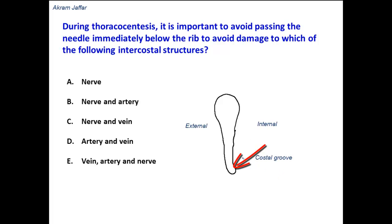The intercostal neurovascular bundle is formed by three neurovascular structures: an intercostal vein, which is located above; the intercostal artery, which is located below the vein; and the lowermost structure is the intercostal nerve. So from above downwards we have: vein, artery, and nerve.